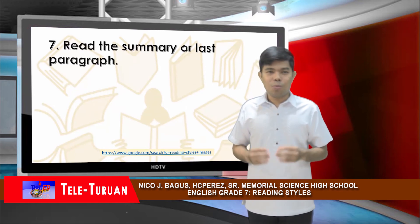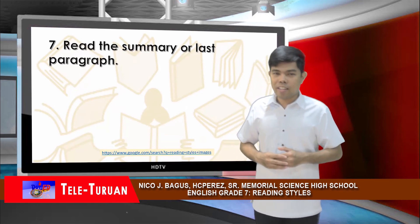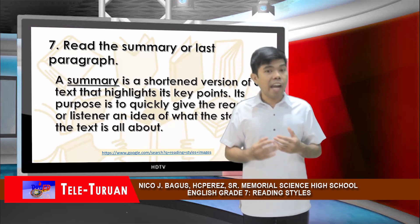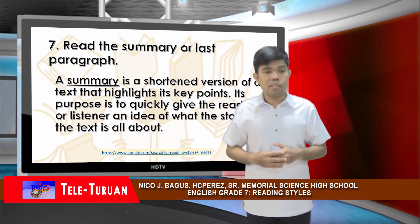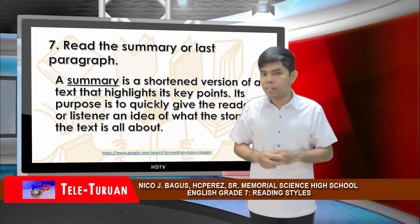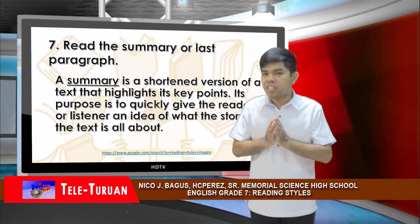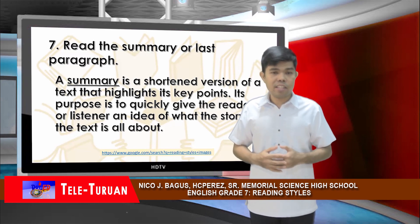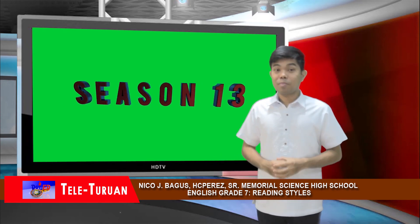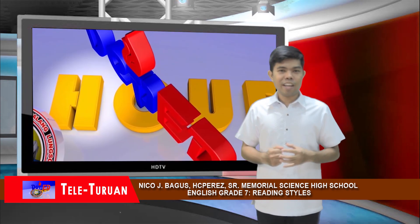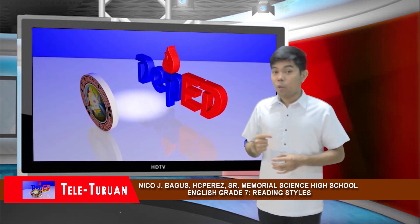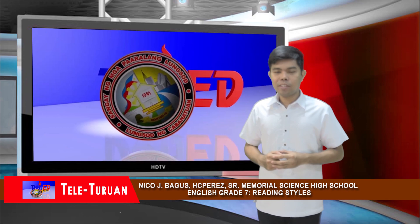Step 7: Read the summary or last paragraph. A summary is a shortened version of a text that highlights its key points. Its purpose is to quickly give the reader or listener an idea of what the story or the text is all about. And that's all for skimming. Please stay tuned for more discussion. When we return, we will have the next reading style. We'll be right back after a few reminders from the studio.